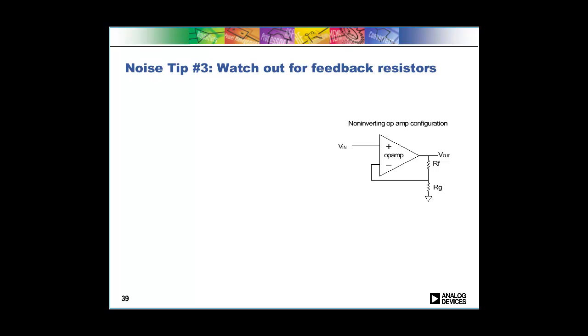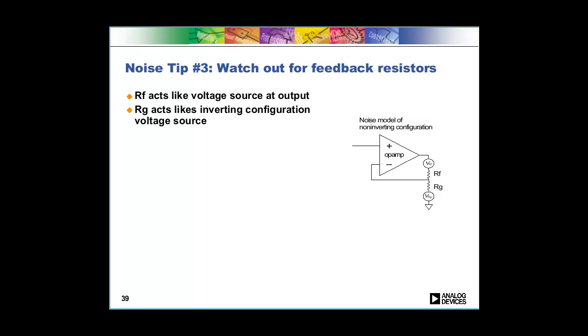And then the third thing to watch out for, if you're doing really low noise design—for medium level it doesn't matter all that much—is the size of your resistors, your feedback resistors. If we look at a model of our non-inverting configuration with feedback resistors, we'll see that we've got these two voltage sources. If you look at what those voltage sources are you'll see that the RF resistor, the resistor in the feedback, looks like a voltage source at the output.